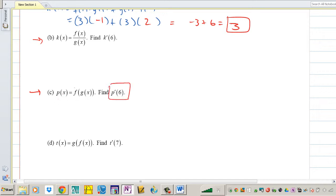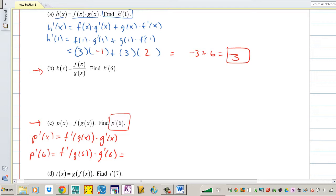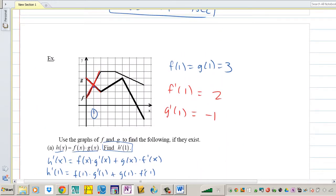P says find P prime of 6. So P prime, what's the derivative of P prime? It's going to be F prime of G of X times G prime of X. That means P prime of 6 is F prime of G of 6 times G prime of 6. Very careful, let's pay attention. We're concentrating at 6, so let's go to 6.